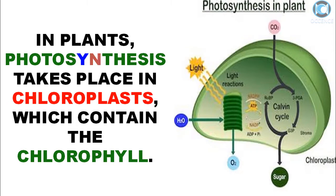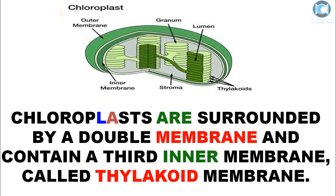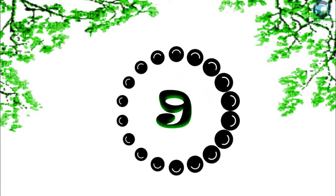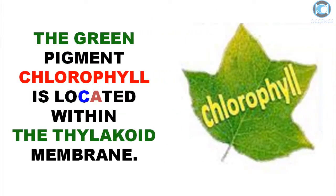In plants, photosynthesis takes place in chloroplasts, which contain the chlorophyll. Chloroplasts are surrounded by a double membrane and contain a third inner membrane called the thylakoid membrane. The space between the thylakoid and the chloroplast membranes is filled with a fluid material called the stroma.